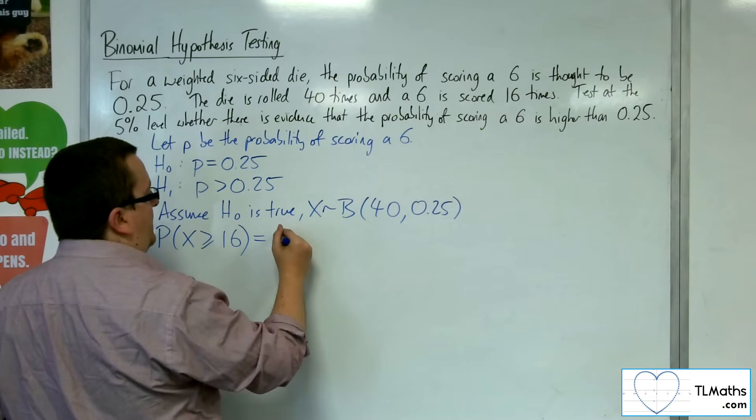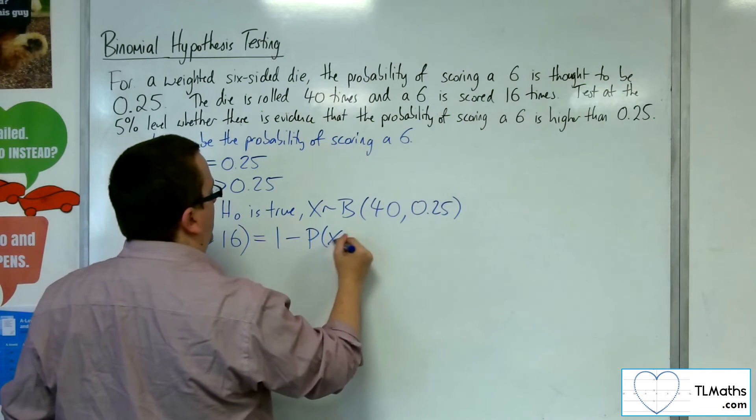Now, our calculator can't look up greater than, so we're going to have to do one minus the probability of X being less than or equal to 15.